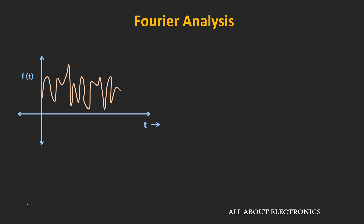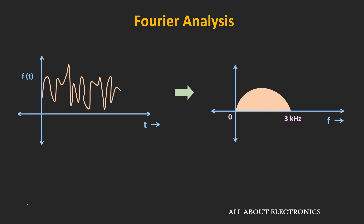In the previous video, we had seen that from the communication perspective, it is very useful to know the frequency spectrum of any signal. For example, if we look at this signal in the time domain, then except for a few things, we can hardly tell anything about this signal. But if we see the frequency spectrum of this signal, then we can say that it contains frequencies from 0 to 3 kHz. So many times, this information in the frequency spectrum is very useful.